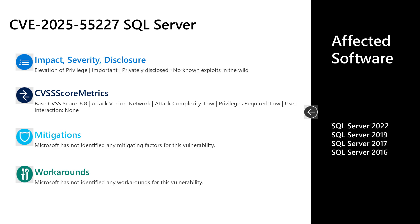The last vulnerability I'll cover is CVE-2025-552227, an important elevation of privilege vulnerability in SQL Server. It has a base CVSS score of 8.8 — the attack vector is over the network, attack complexity is low, low privileges are required, and no user interaction is required. There are no documented mitigations or workarounds. An attacker who successfully leverages this would be able to gain sysadmin privileges. The affected software is SQL Server 2016, 2017, 2019, and 2022 at the latest cumulative update. If you're using an older cumulative update, you'll need to upgrade to the latest cumulative update first and then install this security update.